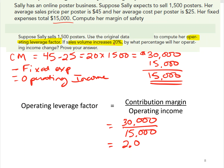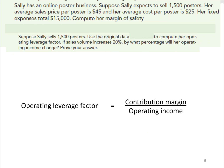If volume increases by 20%, we multiply that 20% times the operating leverage factor of 2, which means operating income will increase by 40%. A 20% increase in volume produces a 40% increase in operating income. Let's go through and verify this.